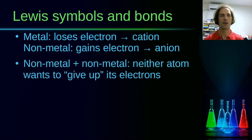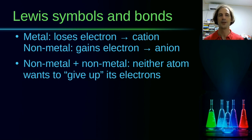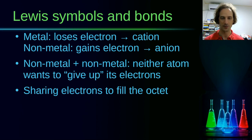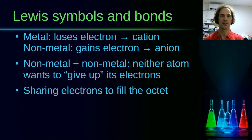We also know that there are many compounds in which non-metals bond with other non-metals. In this case, none of the atoms will want to give up their electrons, because they all want to gain electrons to reach the 8-electron structure. Using Lewis's theory, we can find a way to share electrons between these atoms to fill up the octet of each one.